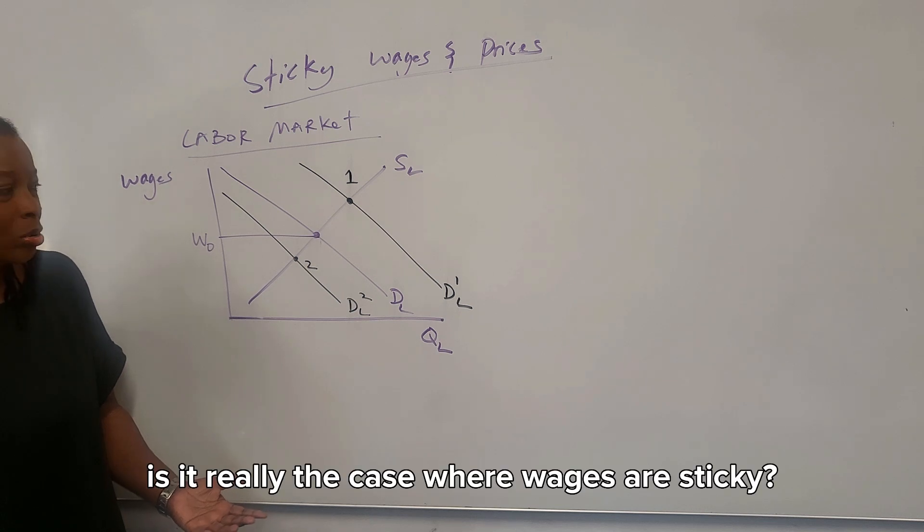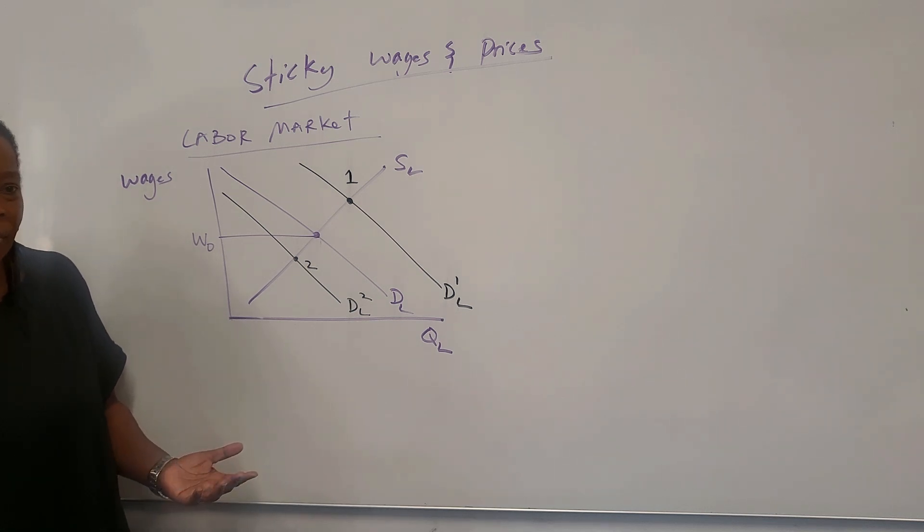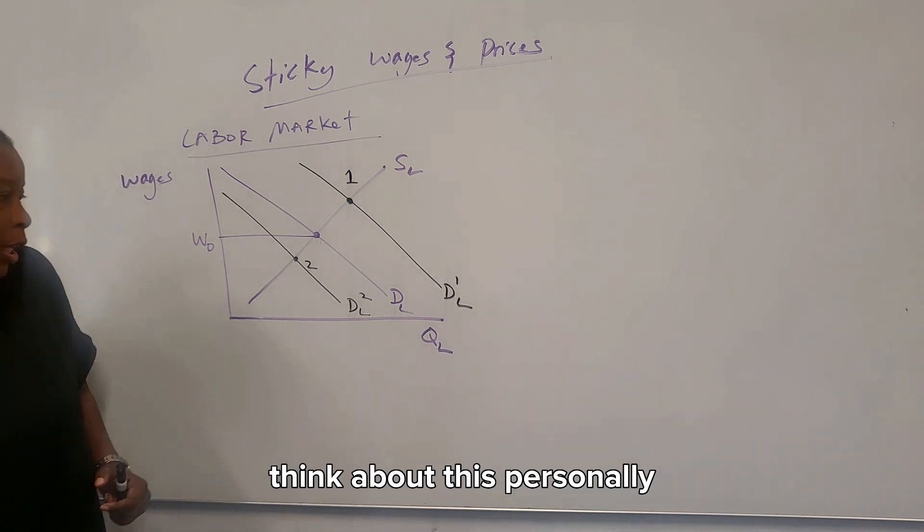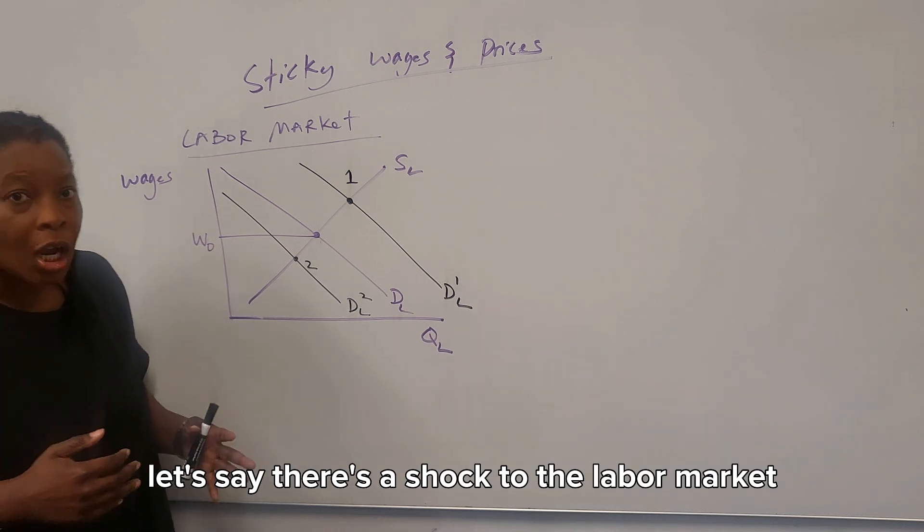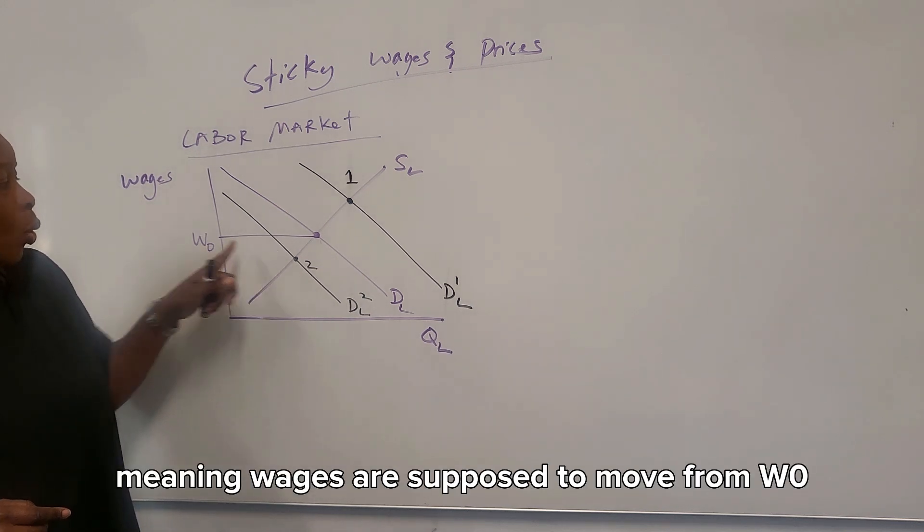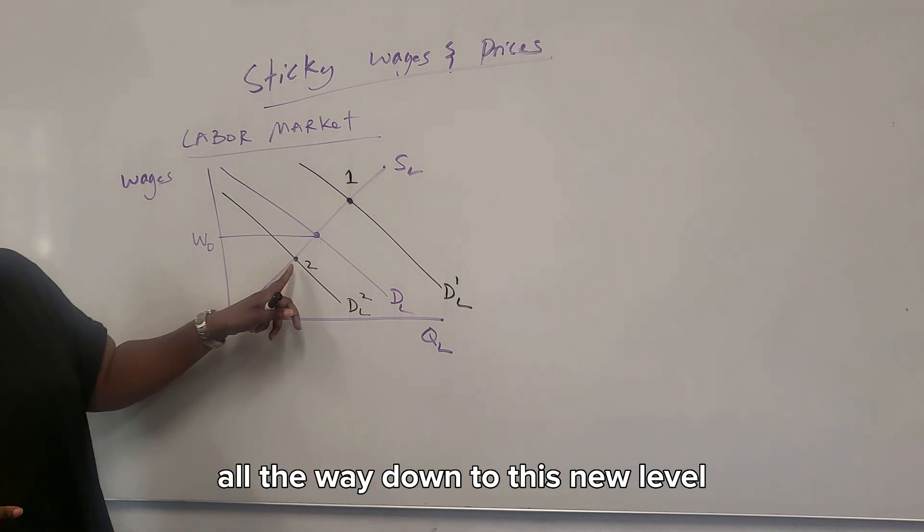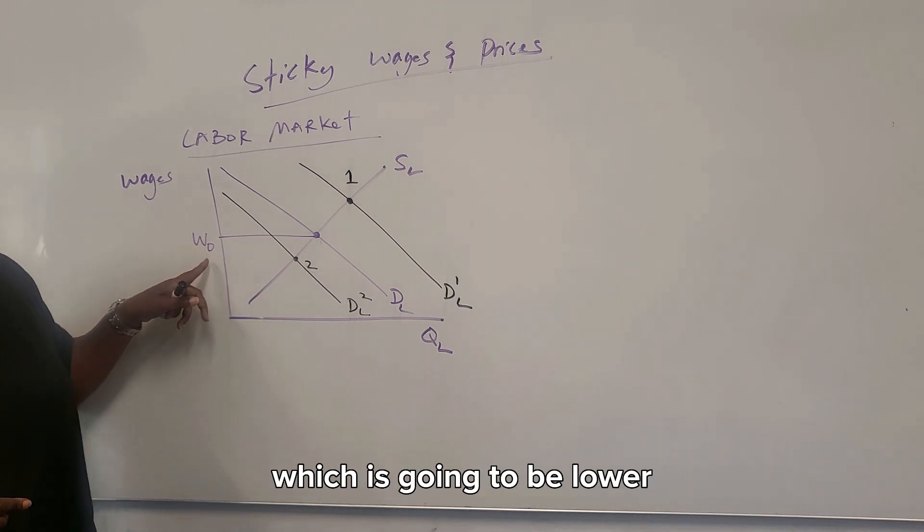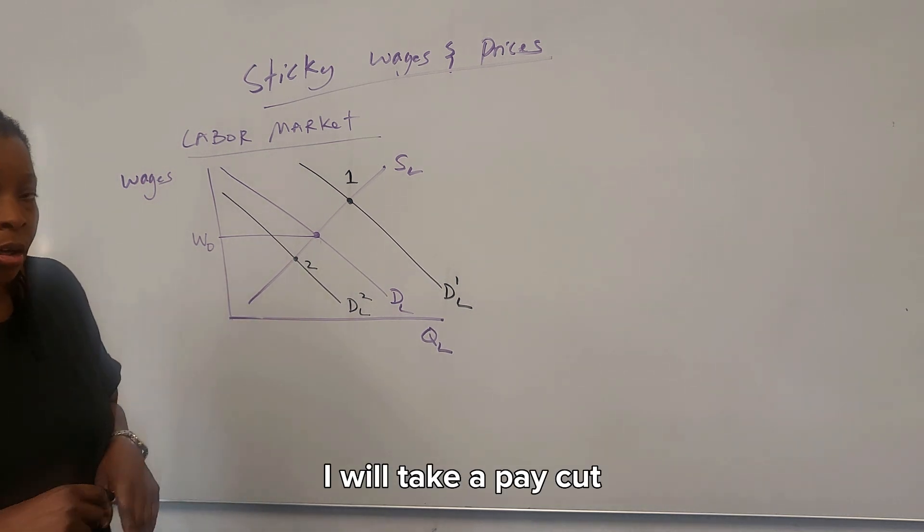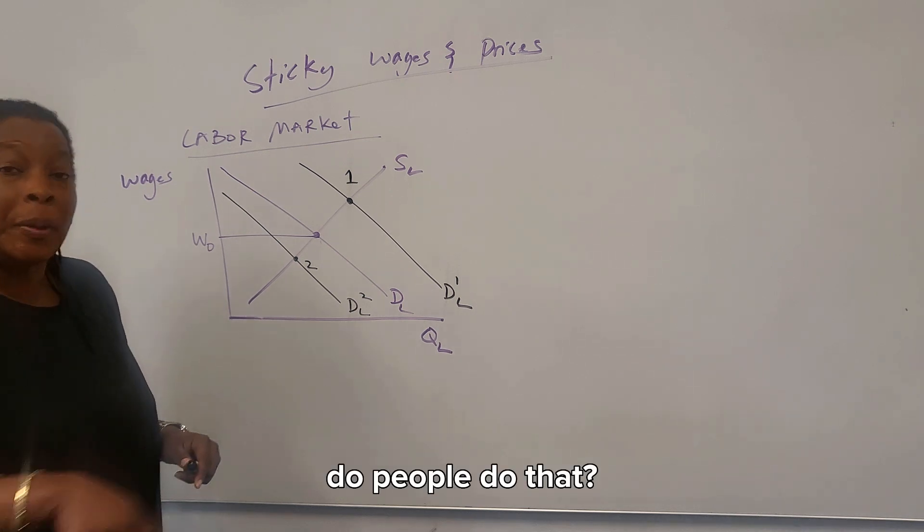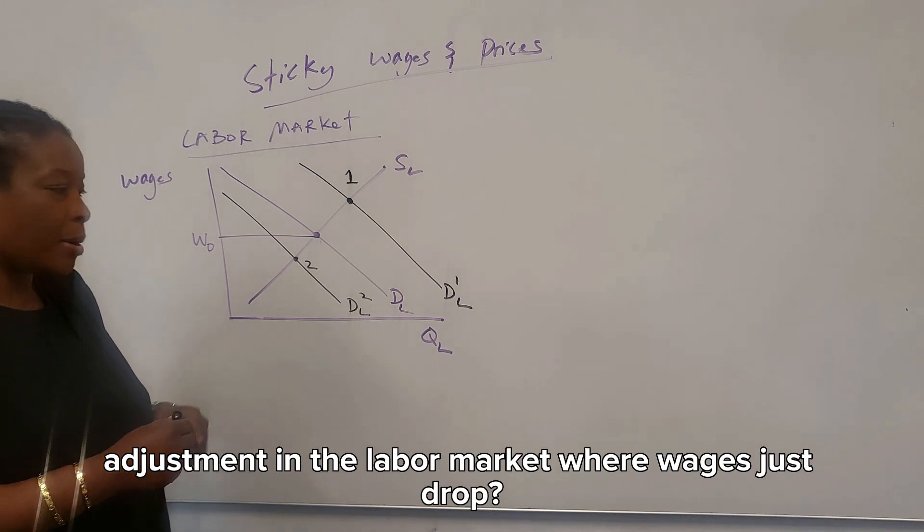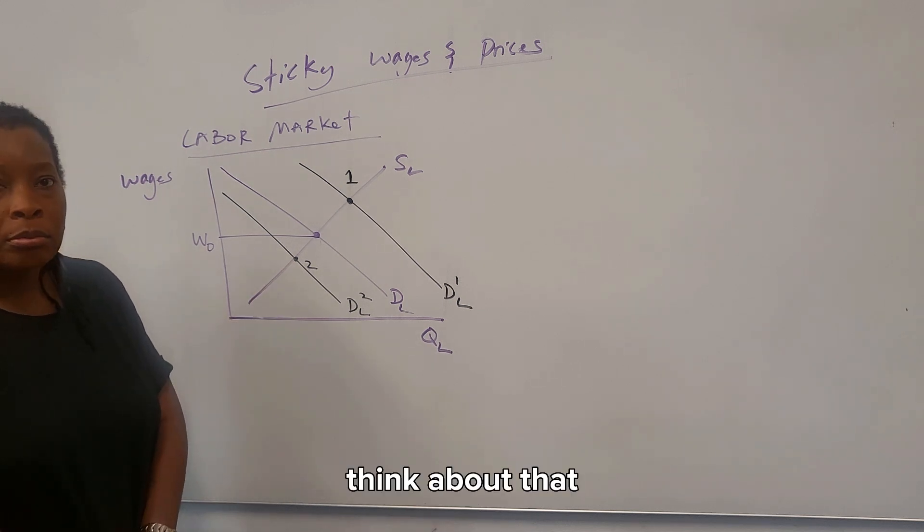Now the thing is, was this true? Is it really the case where wages are sticky? Does it take time for wages to adjust? Think about this personally. Let's say there's a shock to the labor market. And from this shock, let's say it's negative, you're supposed to be at two. Meaning wages are supposed to move from W0 all the way down to this new level which is going to be lower. Do you personally go in and say, I know how the economy works, I'm gonna take a pay cut. Do you do that? Do people do that? Is it the case where there's this sense of an immediate adjustment in the labor market where wages just drop?